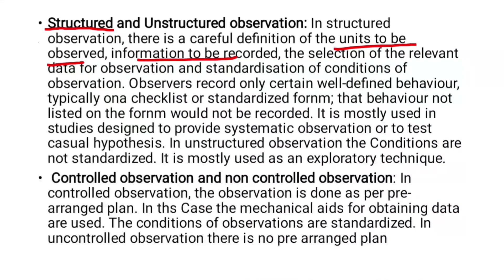In controlled observation, the observation is done as per a pre-arranged plan — the researcher is guided by a pre-planned plan when observing a particular group or situation. That is controlled observation. Non-controlled observation is not done as per a pre-arranged plan — that is non-controlled observation.